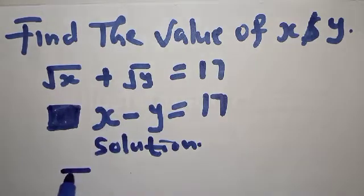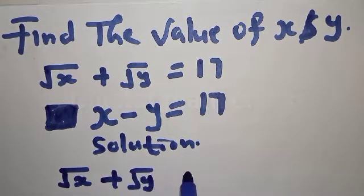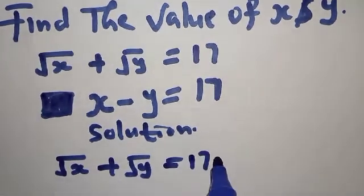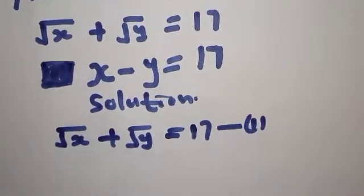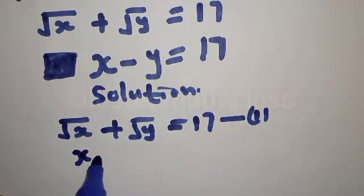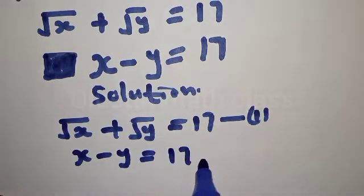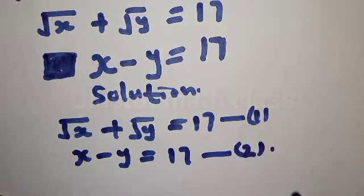We have two given equations. Equation 1 is: square root of X plus square root of Y equals 17. Equation 2 is: X minus Y equals 17.